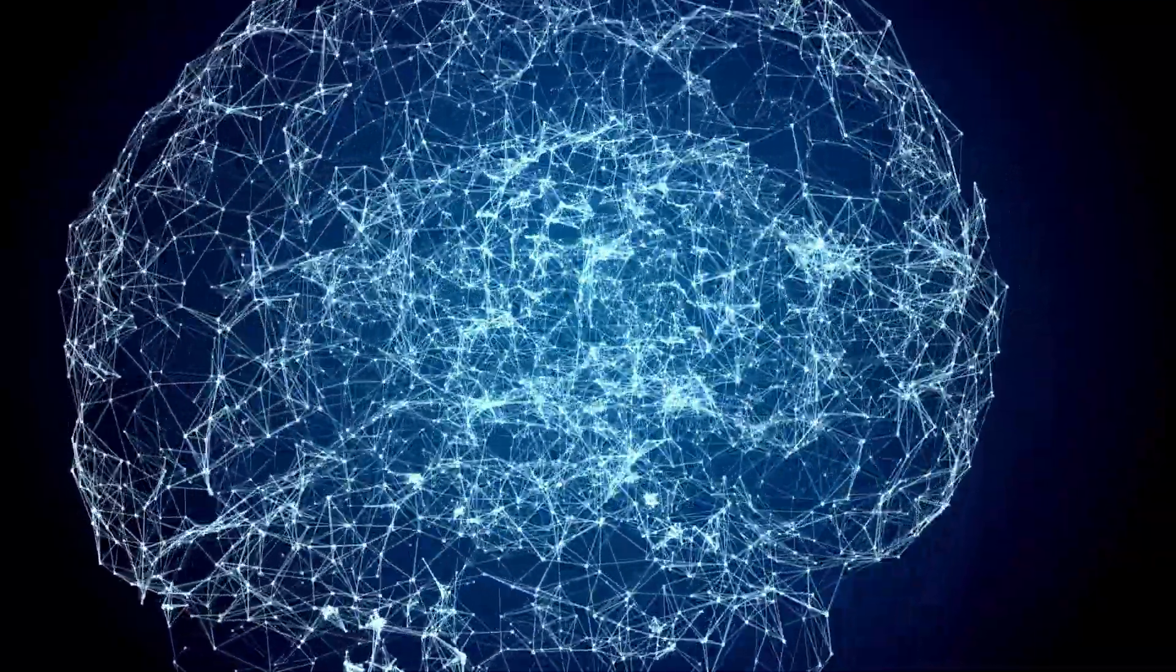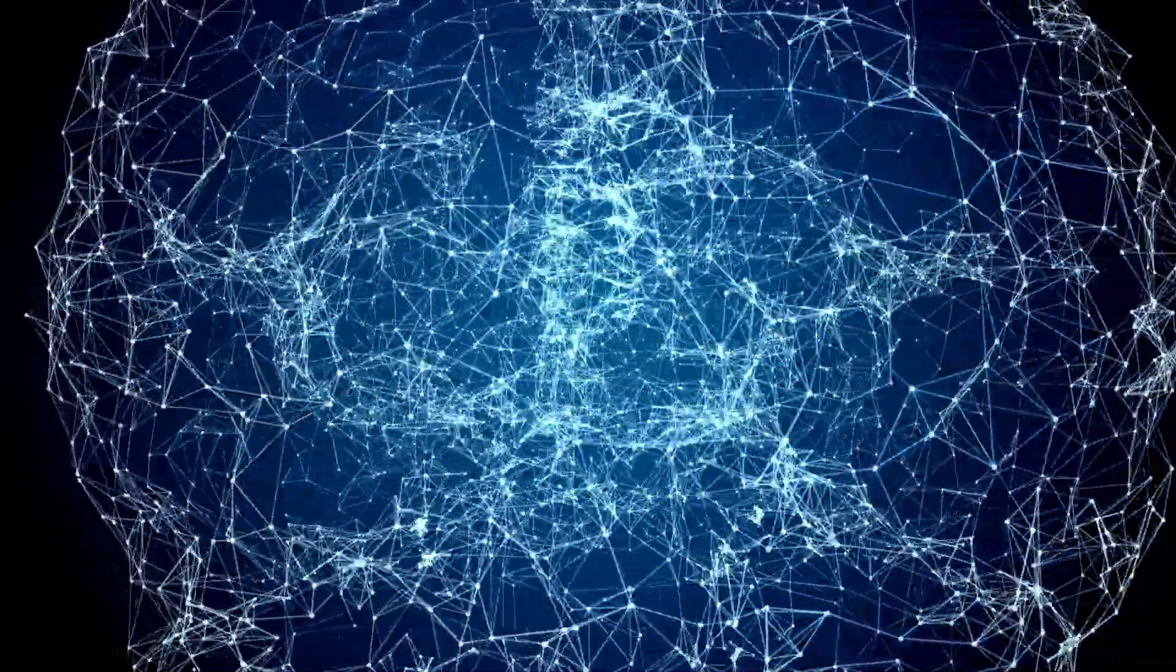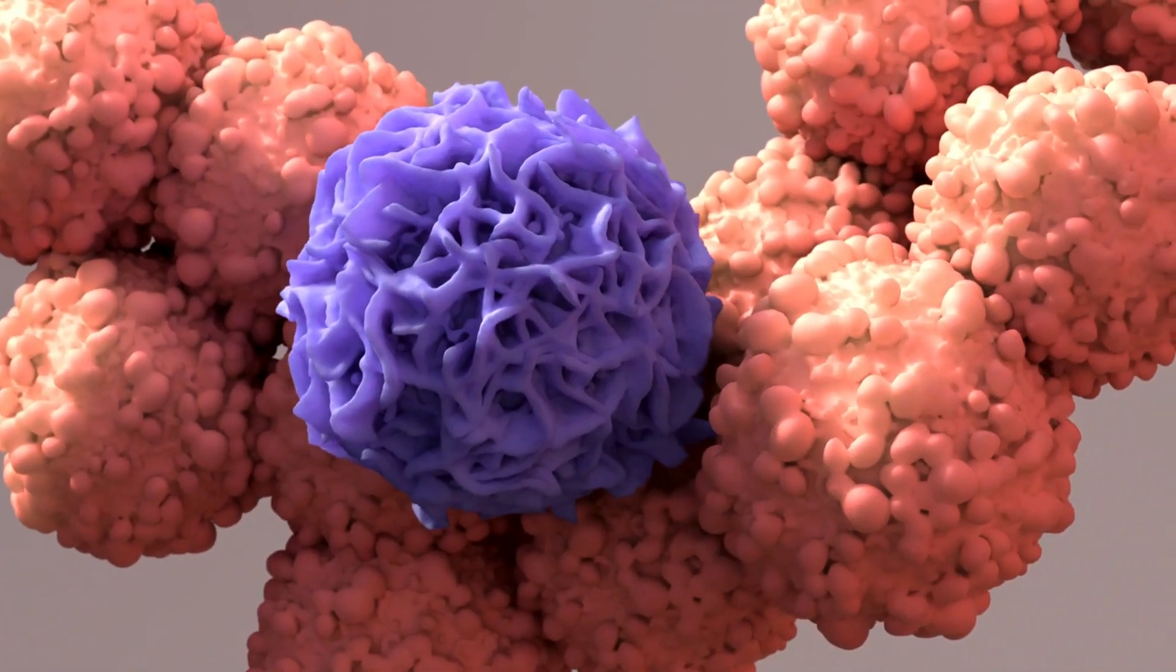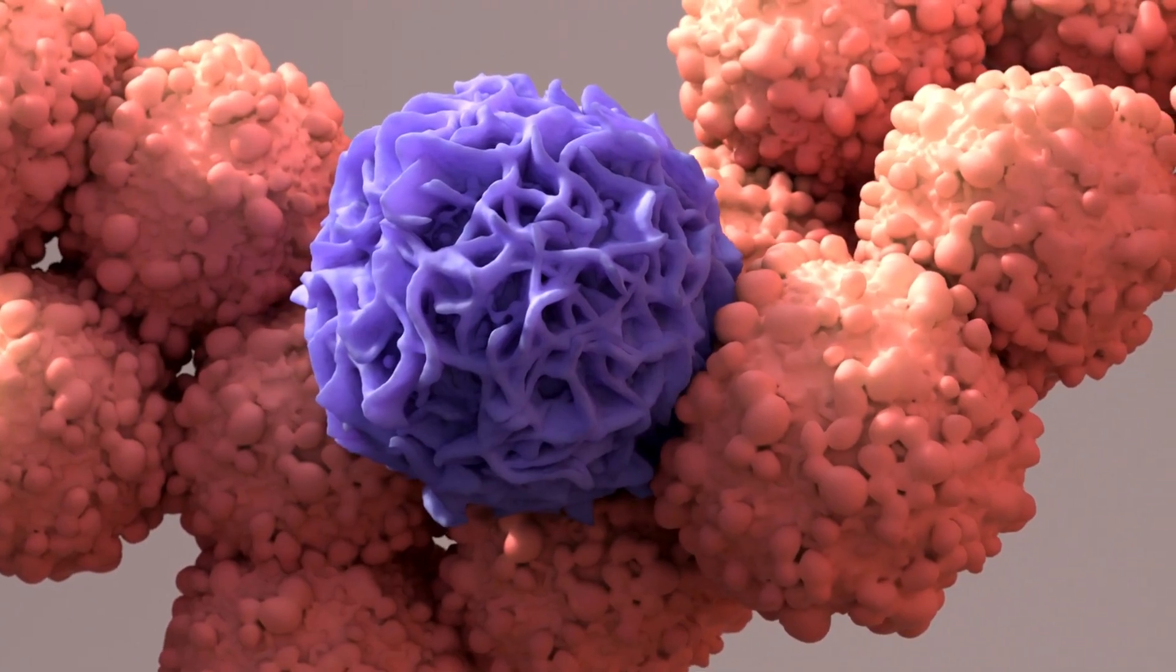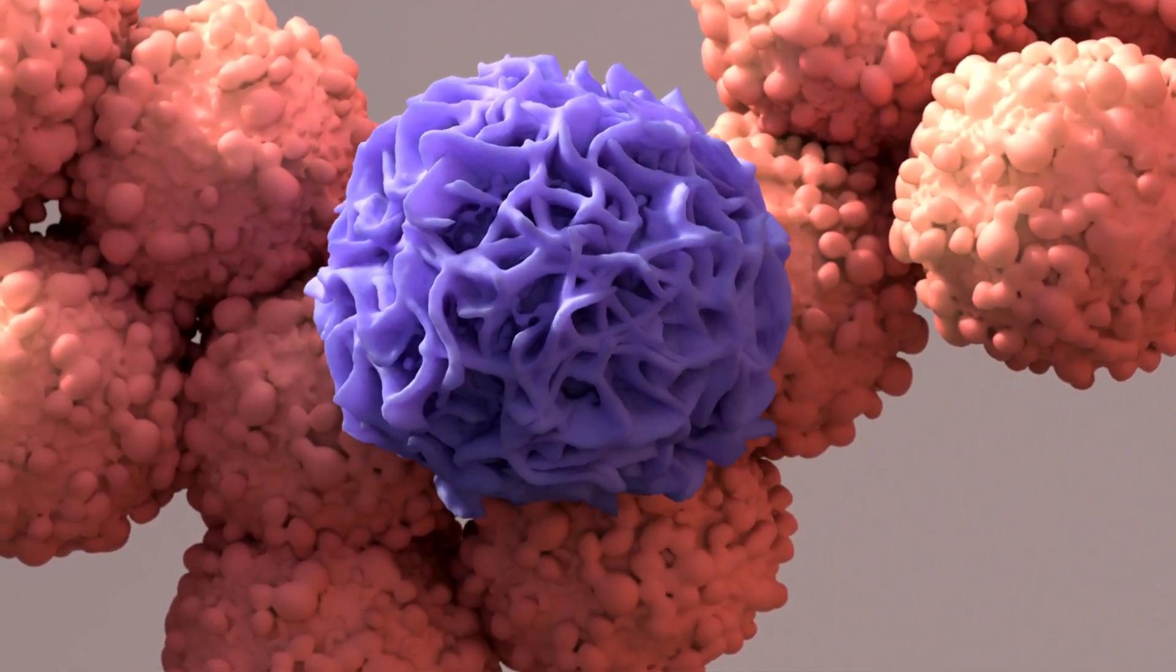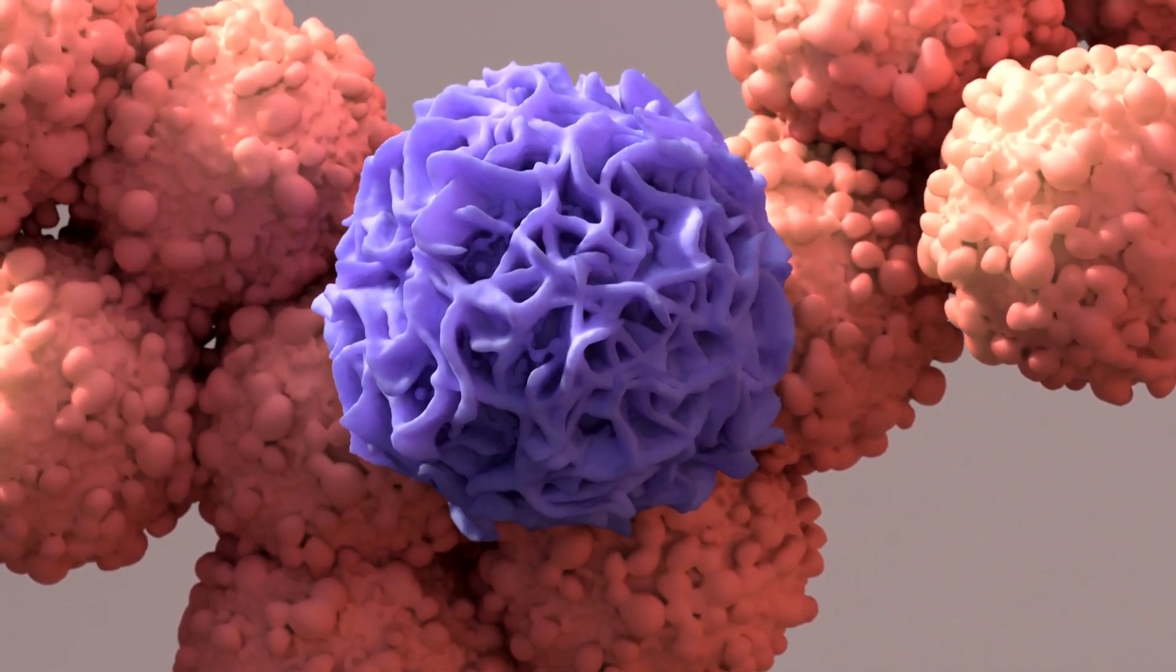However, like other cells in our body, oligodendrocytes can also be affected by adverse conditions. Diseases like multiple sclerosis, for example, involve an autoimmune response that attacks and damages myelin, impairing the function of oligodendrocytes and neurons.